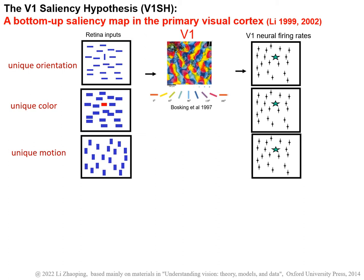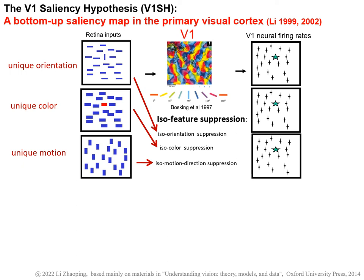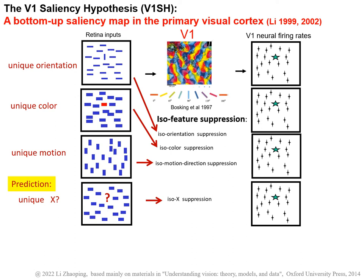The responsible V1 mechanisms are the intercortical interactions between V1 neurons to give iso-feature suppression, which includes iso-orientation suppression, isocolor suppression, and isomotion direction suppression. We can ask: can we predict from the V1 saliency hypothesis another very salient behavior due to another feature dimension x, being a prediction in principle that saliency by such a feature dimension x was unknown before?